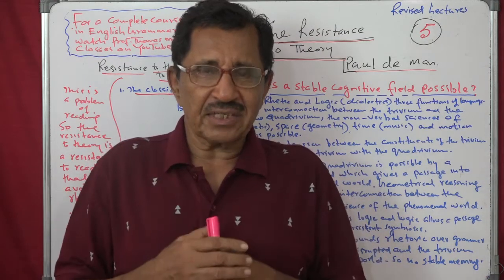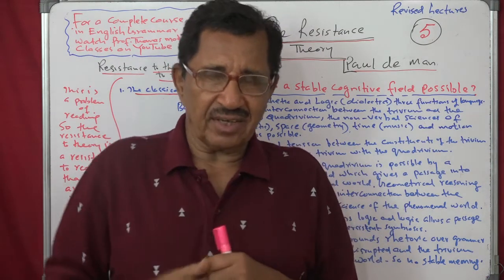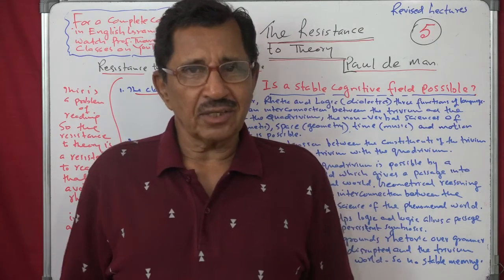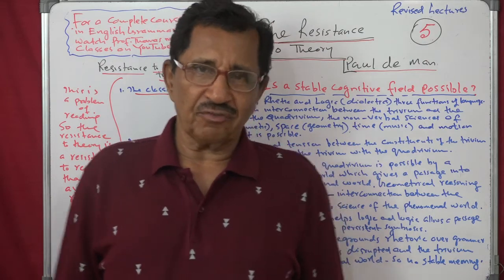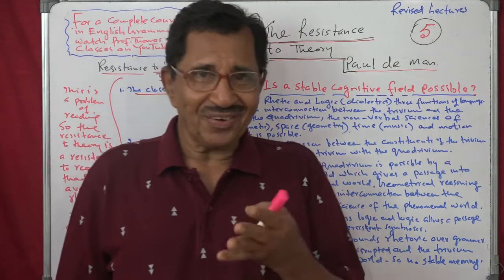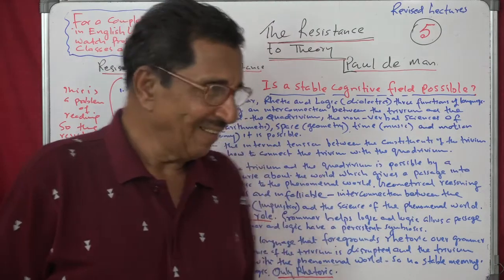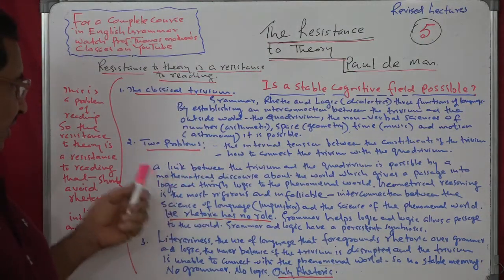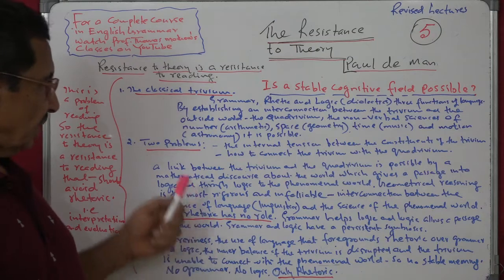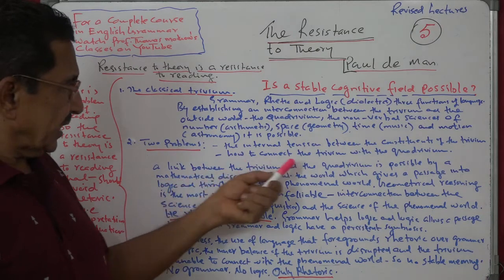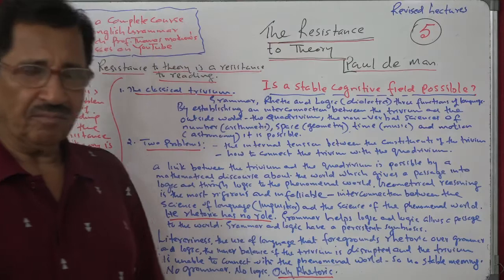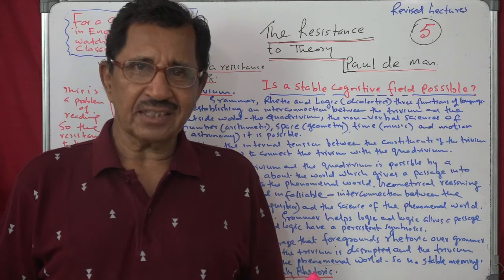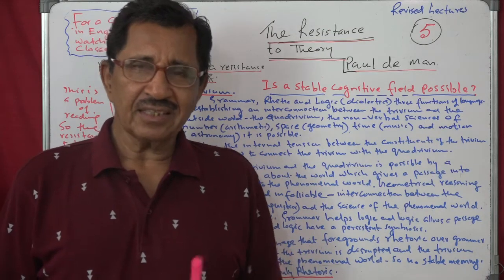If this connection between the Trivium and the outside world can be established through an interlinking agency, then naturally a stable cognitive field will result. This is the opinion of Paul De Man, not mine. However, this is also impossible under certain conditions. There are two problems: first, the internal tension between the three constituents — grammar, rhetoric, and logic.